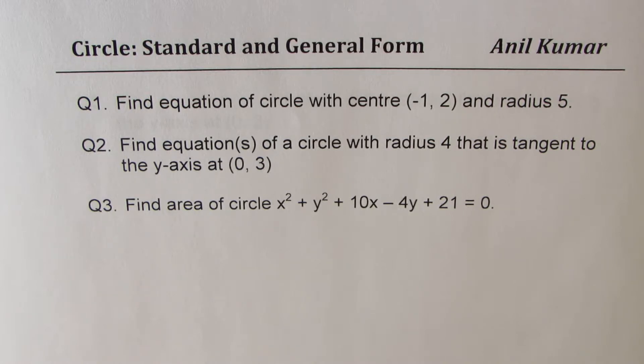Here are three examples which will help us to understand the whole concept. Question number one: Find equation of circle with center (-1, 2) and radius 5. Question two: Find equations of a circle with radius 4 that is tangent to the y-axis at (0, 3). Question number three: Find area of circle x² + y² + 10x - 4y + 21 = 0.